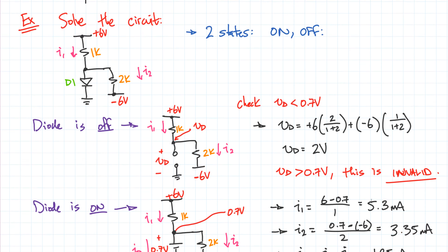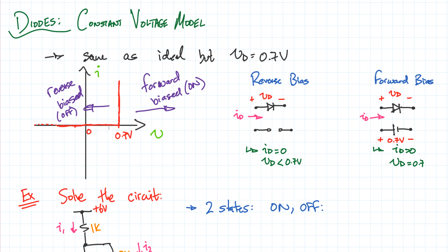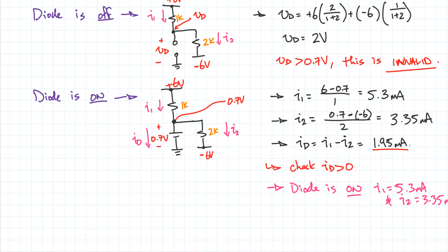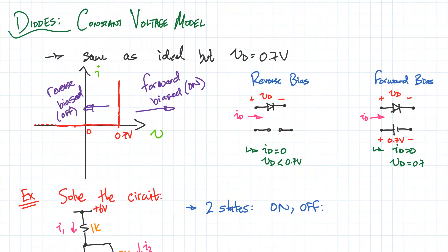To recap: the only difference between the ideal and constant voltage models is that the 0 boundary shifts to 0.7. The constant voltage model is the most commonly used — the exponential model, which we'll look at later, has niche applications, and the ideal model is a rough approximation where you're off by about 0.7 volts. The conditions to check are the same: if off, verify VD is less than 0.7; if on, verify ID is greater than 0.